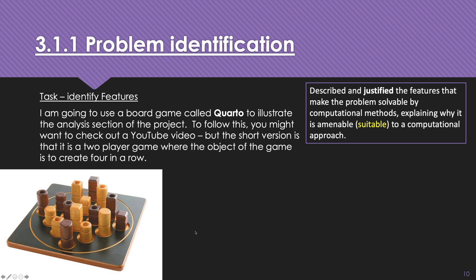To work through identifying features, I'm going to use a game called Quarto. You might never have played Quarto before — it's quite a simple game but can have really interesting strategies. If you need to, stop this video and have a look on YouTube to see what Quarto involves. The short version is it's a two-player game where the object is to create four in a row of something. You don't need to know everything about it, but it'd be handy to know a little so you can follow along.